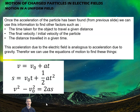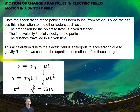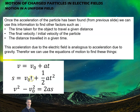Once we know the acceleration of a particle, we can use it to calculate other things: how long it takes to travel a certain distance, its final velocity, initial velocity, or how far it travels in a given time. The acceleration due to an electric field is treated exactly the same as the acceleration due to gravity in the equations — not in actual value, but in how we use it. So we can use the equations of motion: V = V₀ + at; S = V₀t + ½at²; and V² − V₀² = 2aS (also written as V² = V₀² + 2aS).